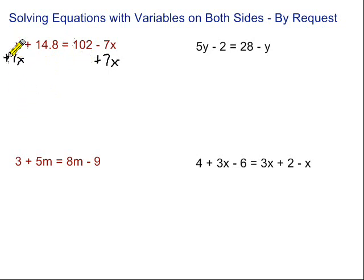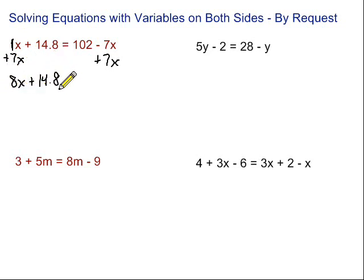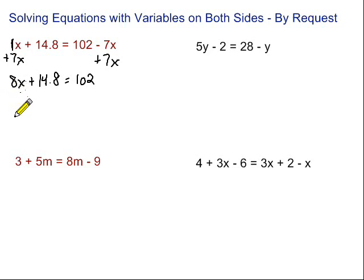Then we bring down what we have left. x — remember this is 1x — 1x plus 7x gives us 8x. Bring down everything else: plus 14.8 equals 102. Now this equation should start to look a little bit less scary. We've got all the variables together and we want to go ahead and get that variable by itself.